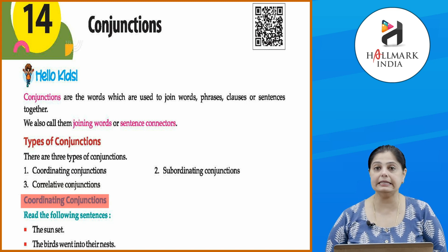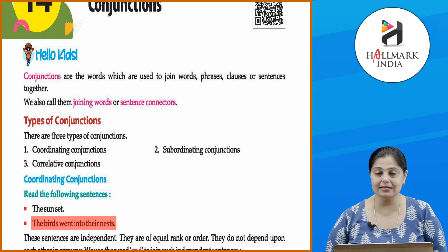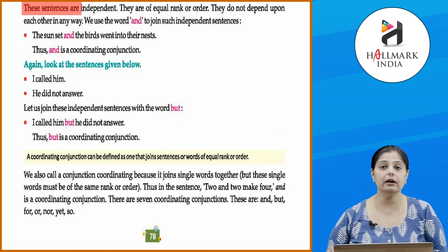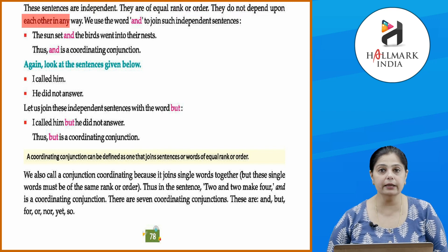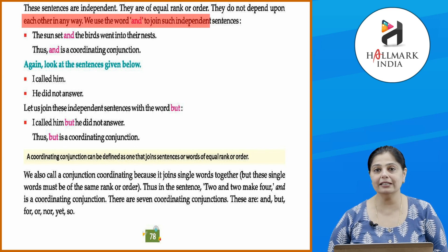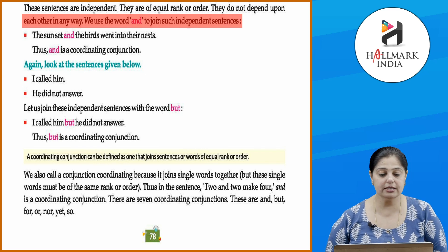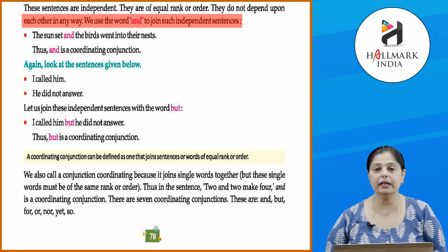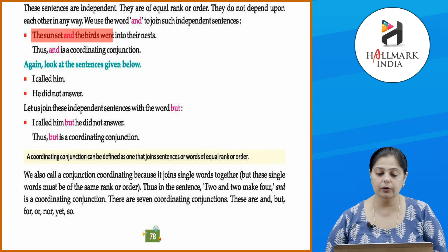Let's talk about coordinating conjunctions in detail. Read the following sentences: 'The sun set. The birds went into their nests.' These sentences are independent — they are of equal rank or order and do not depend upon each other in any way. We use the word 'and' to join such independent sentences: 'The sun set and the birds went into their nests.'